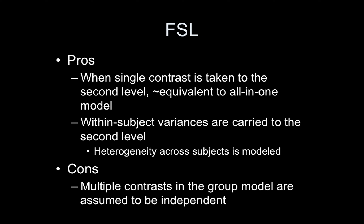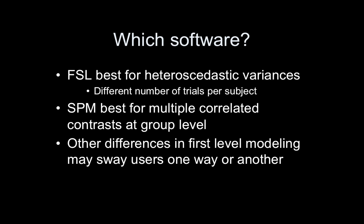Which software? FSL is better for heteroscedastic variances, so if you have really widely varying numbers of trials per subject. SPM is better for multiple correlated contrasts. Again, I would use this new sandwich estimator routine. Of course other differences in first-level modeling sway users one way or another. If you're in AFNI, this would just sway you to choose one function over another. Ultimately, at the end of the day, it's probably what the lab you've worked in uses or what you were sort of raised on that you will use.